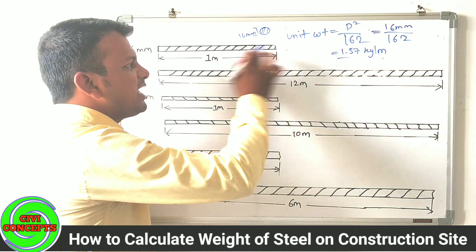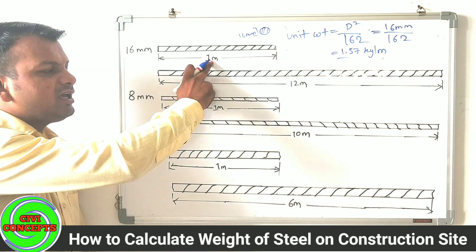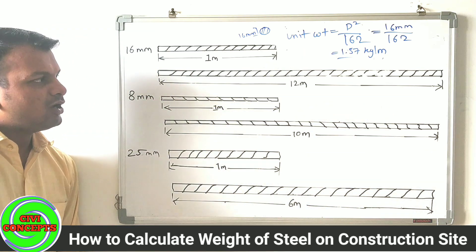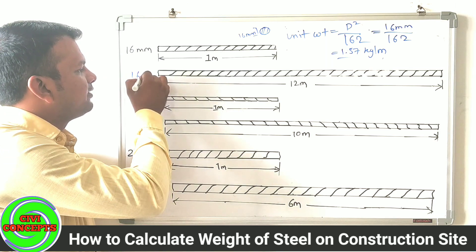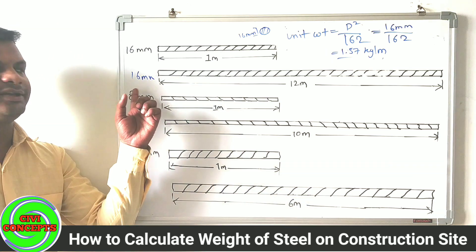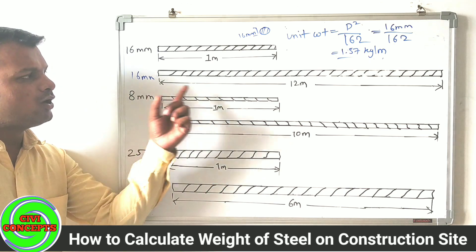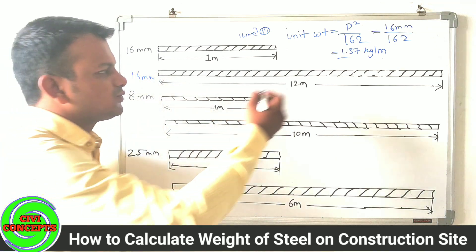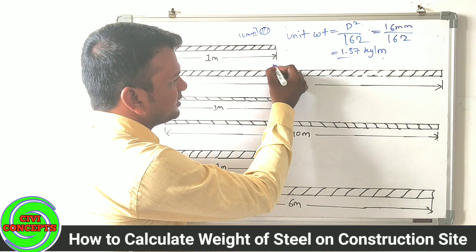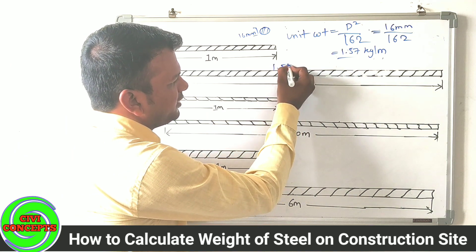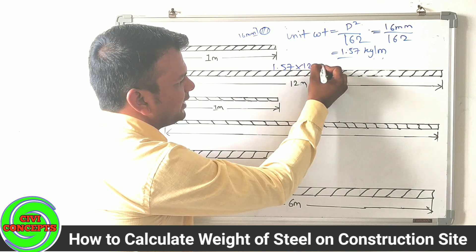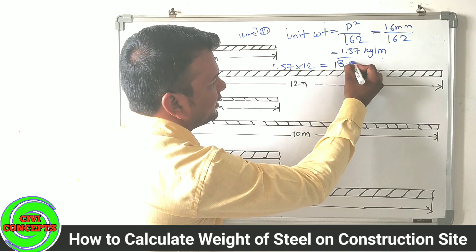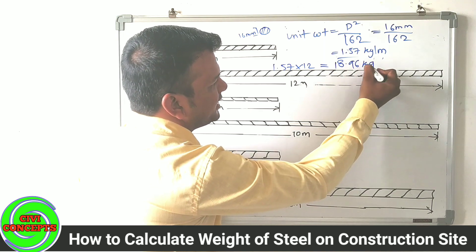So this weight is 1.57 kg per meter. Now, this bar is 16mm diameter and 12 meters long. The unit weight is 1.57 kg per meter. If you multiply by 12 meters, then the total weight is 18.84 kg.